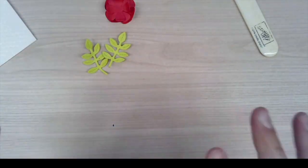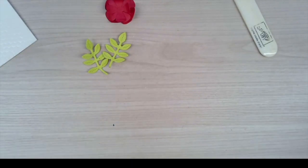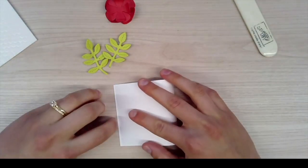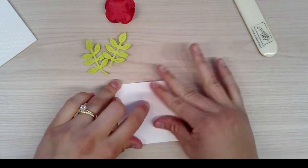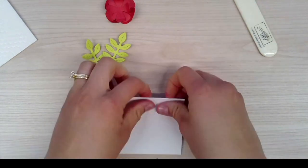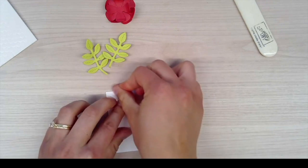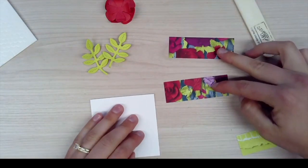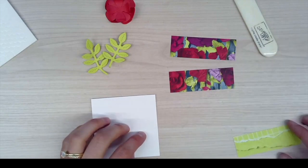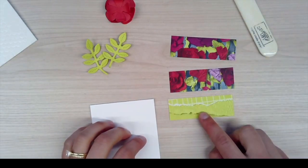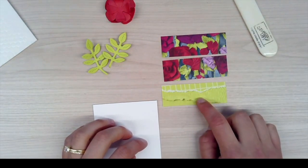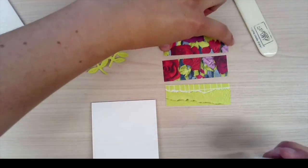I'm going to grab a 3 by 6 Whisper White piece of cardstock, and when I fold that in half that will make your 3 by 3 little note card. I've also got two pieces that are 1 by 3 inch, and then also this Lemon Lime Twist part of the DSP, another one that's 1 by 3 inches.